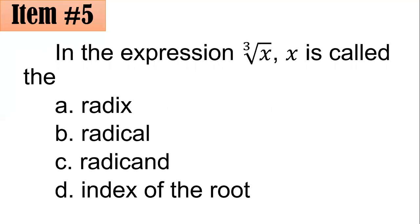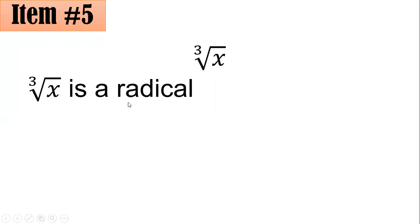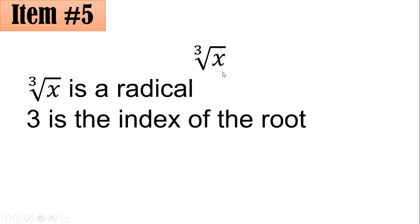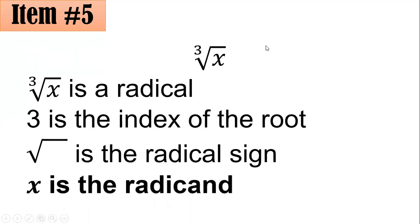Number 5. In the expression cube root of x, what is x called? Is it the radix, the radical, radicand, or index of the root? This given expression is a radical expression — the entire thing is a radical. The 3, placed here at the top left, is the index of the root. The symbol is the radical sign. The expression under the radical sign is called the radicand. Hence, x here is the radicand, and that is letter C.